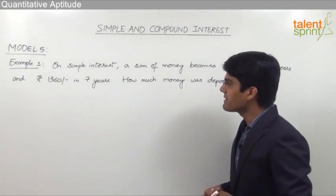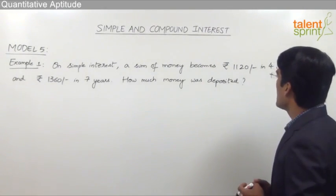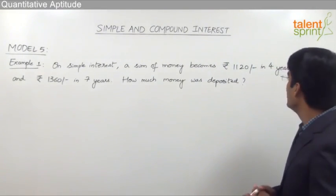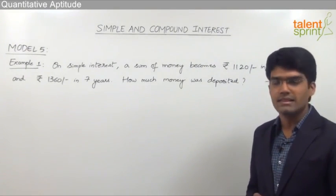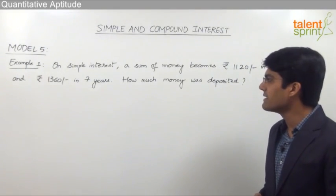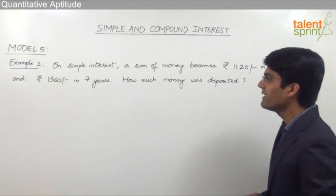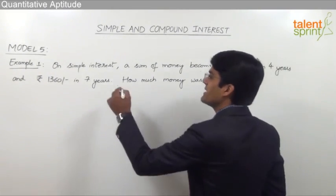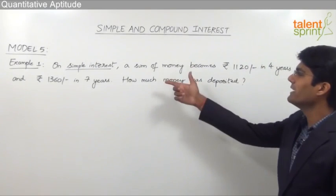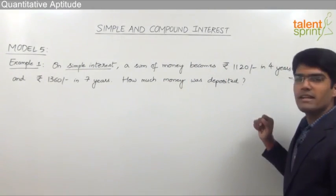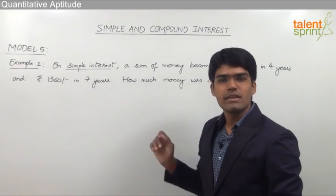On simple interest, a sum of money becomes Rs. 1120 in 4 years and Rs. 1360 in 7 years. How much money was deposited?